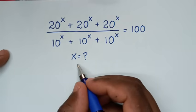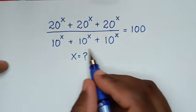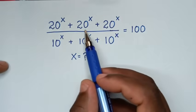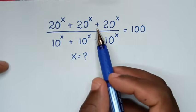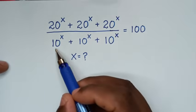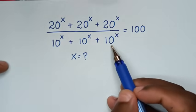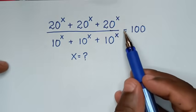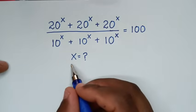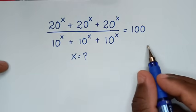Hello, you are welcome to solve this math problem, which is 20 power x plus 20 power x plus 20 power x, over 10 power x plus 10 power x plus 10 power x, is equal to 100. We need to find the value of x from this equation.